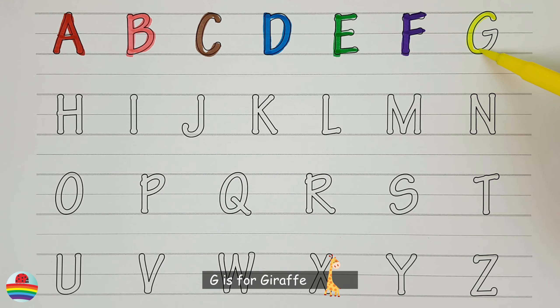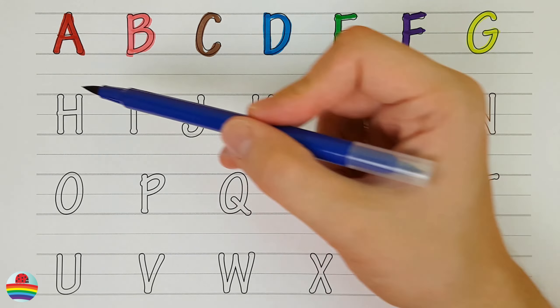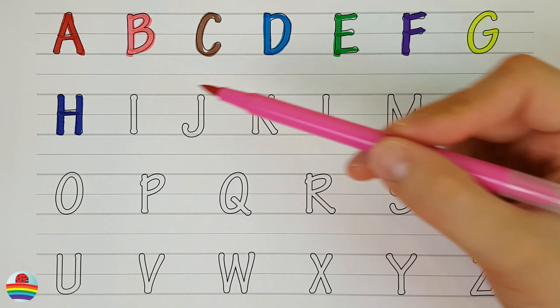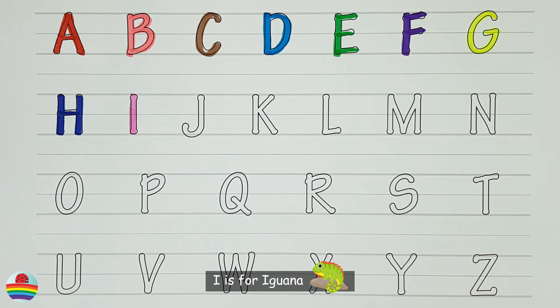G. G is for giraffe. G. H. H is for hippopotamus. H. I. I is for iguana. I.